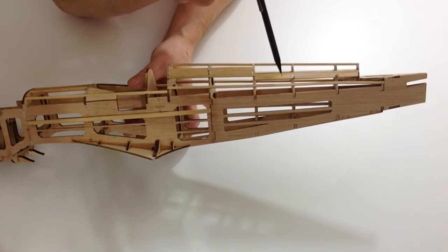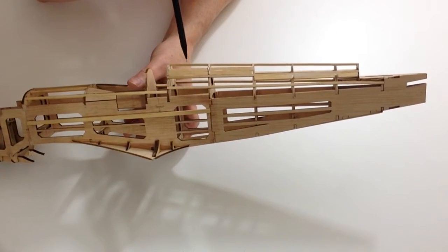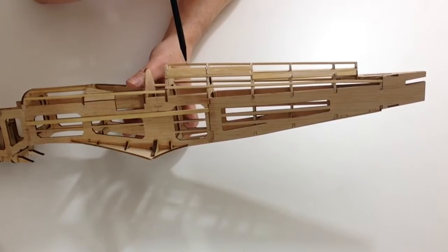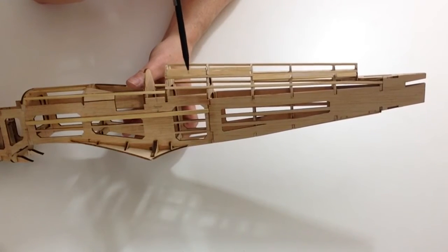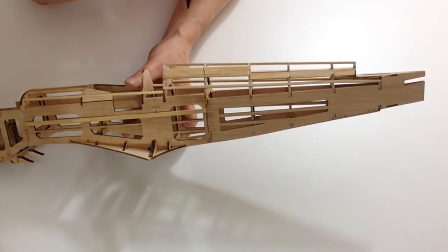Once you've done that, you need to cut 4 pieces from the 2x5mm strip and glue them to these areas above this rib. Once you've done that, do exactly the same for the other side.